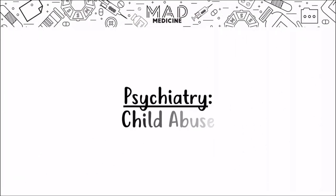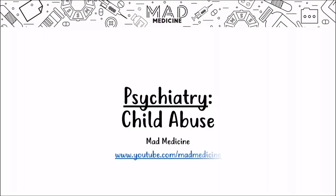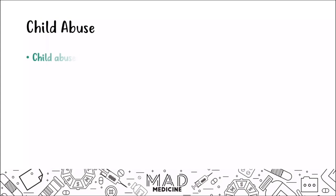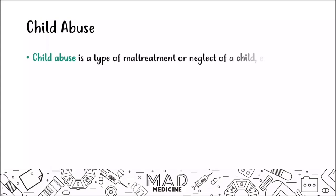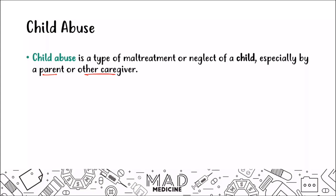Welcome back to Mad Medicine. In this video we are going to be talking about child abuse. Child abuse is a type of mistreatment or neglect of a child, and it's usually done by the parent or other caregiver — someone who is close to the child and always has a lot of access to the child. There are three types of child abuse: physical abuse, emotional or psychological abuse, and sexual abuse.